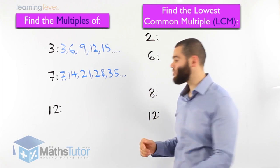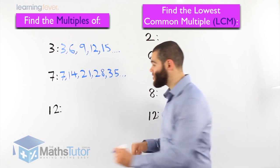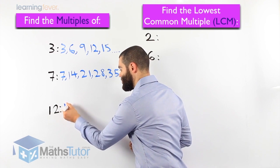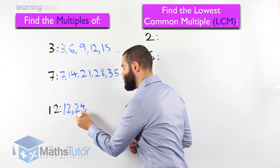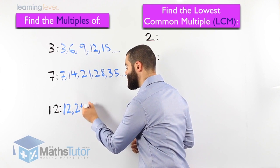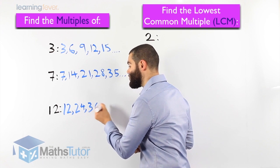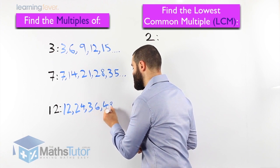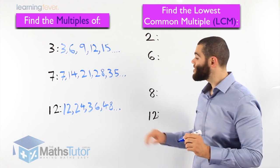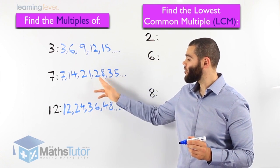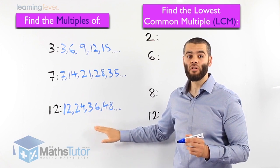The multiples of 12, the times tables of 12. Let's go. 12 times 1 is 12, 12 times 2 is 24, 12 times 3 is 36, 12 times 4 is 48, and we can keep going if we need to. So these are the multiples of 3, of 7, and of 12.